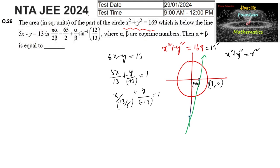The line is 5x - y = 13, and it is given that the area below the line is required. We consider the shaded region. We need to find the point of intersection of the circle and the straight line. From the line equation, 5x - y = 13, so y = 5x - 13.